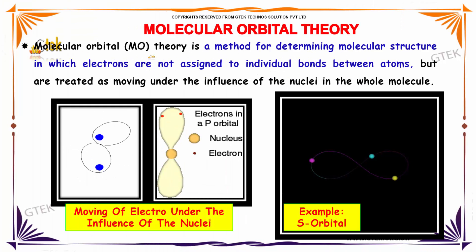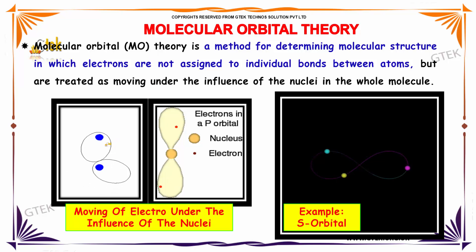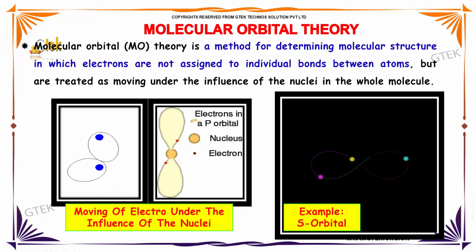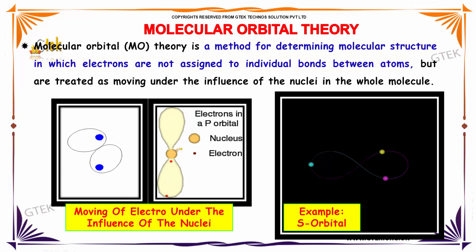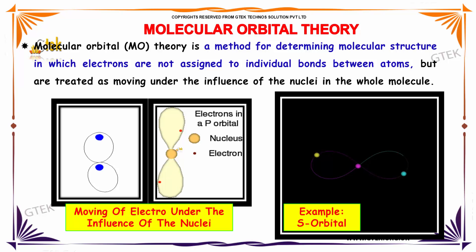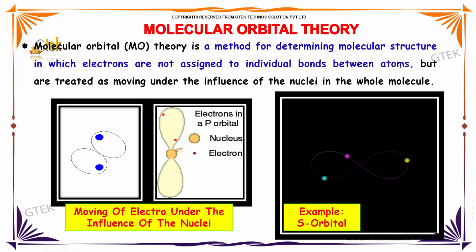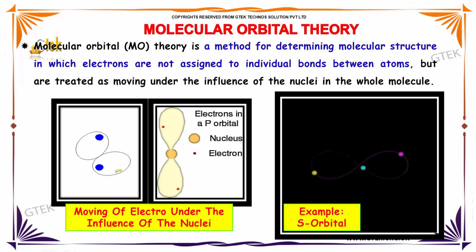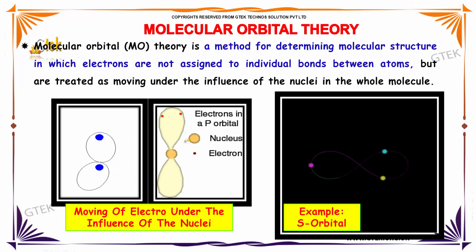Molecular orbital theory is a method for determining the molecular structure, in which electrons are not assigned to individual bonds between atoms but are treated as moving under the influence of the nuclei in the whole molecule. I am trying to show you the movie of the electron under the influence of the nuclei.